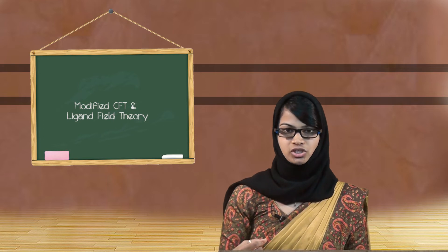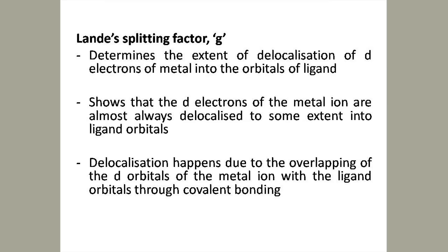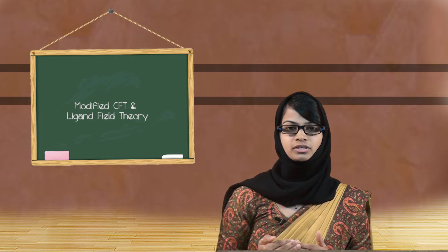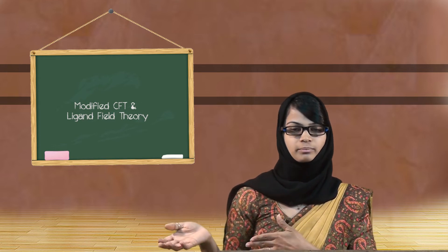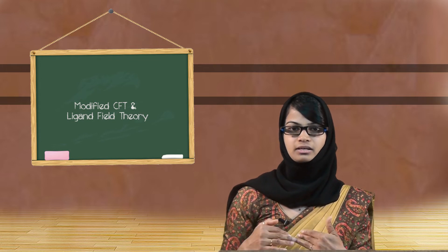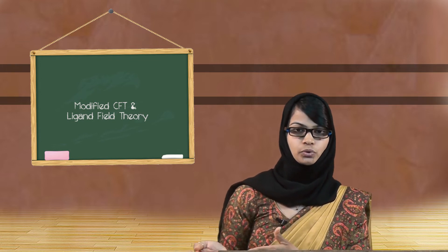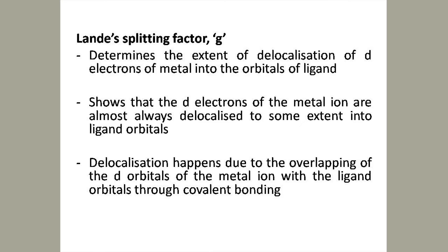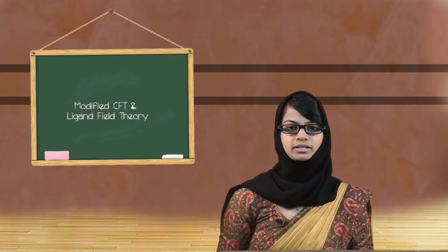The first evidence is the Landé splitting factor g. This g value is always used to study the magnetic behavior of the transition metal complexes. Experimentally, g shows that there is a delocalization of the metal electron into the orbitals of the ligand — the d electrons are getting delocalized into the ligand orbitals. This delocalization from metal orbital to ligand orbital is due to overlapping, and overlapping of the ligand and metal orbitals gives rise to covalent bonding.